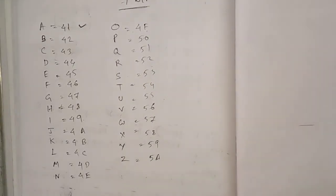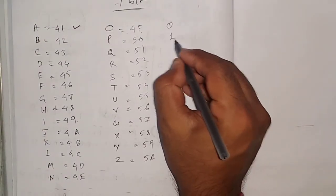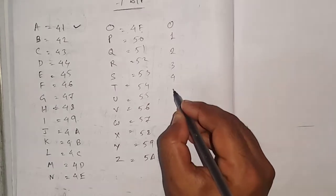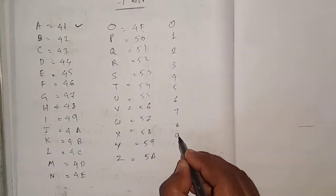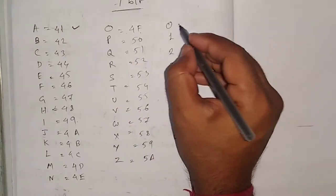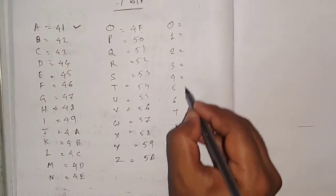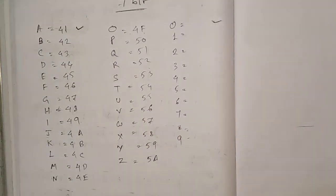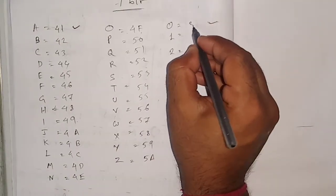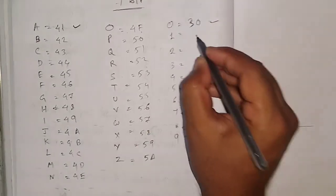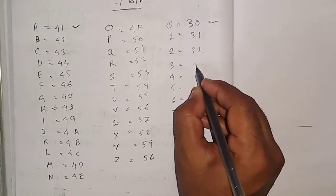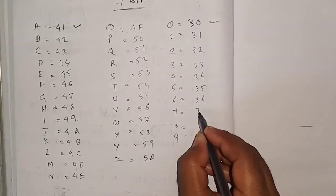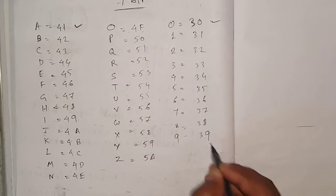One more thing to remember: the digits 0 through 9 — these 10 digits. If you remember the starting value, everything else follows automatically. The starting value is 30. So digit 0 = 30, 1 = 31, 2 = 32, 3 = 33, 4 = 34, 5 = 35, 6 = 36, 7 = 37, 8 = 38, 9 = 39.